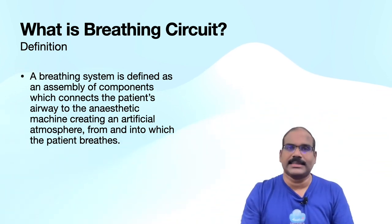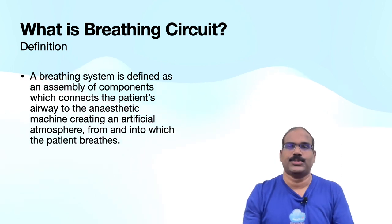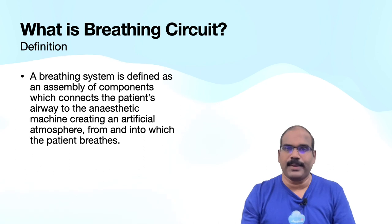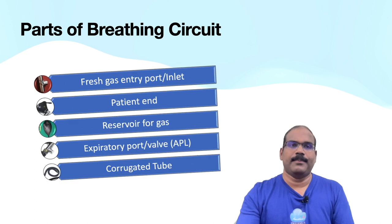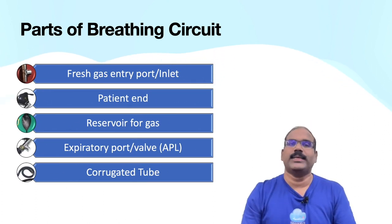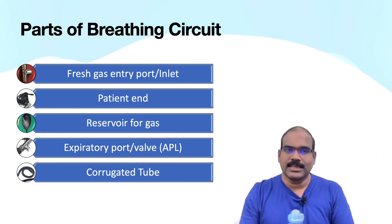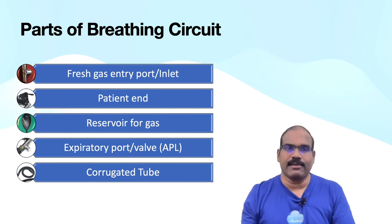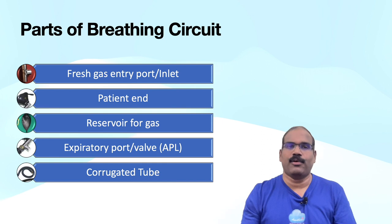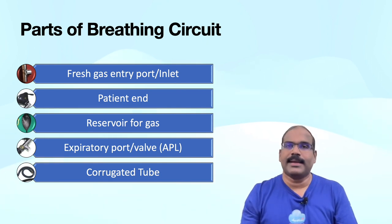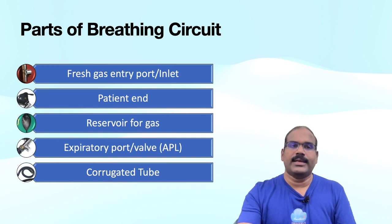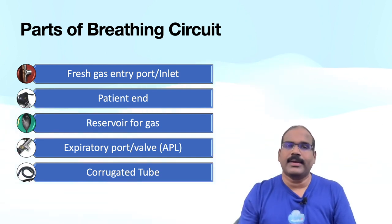What is a breathing system? A breathing system is defined as an assembly of components which connects the patient's airway to the anesthetic machine, creating an artificial atmosphere from and into which the patient breathes. A breathing system primarily consists of a fresh gas entry port or delivery tube, a port to connect to the patient's airway, a reservoir in the form of a bag or corrugated tube to meet peak inspiratory flow requirements, an expiratory port or valve through which exhaled gas is vented to the atmosphere, and corrugated tubes for connecting these components.